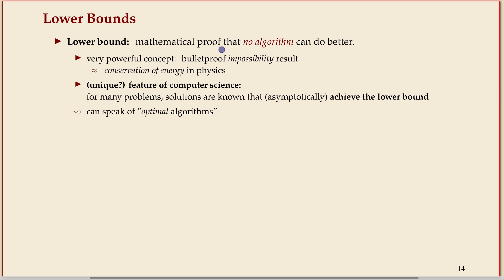In that sense it's a super powerful concept, because it means if you have an algorithm that's close to that bound you can stop searching. I can compare it to the conservation of energy principle in physics. That's the kind of generality that we're hoping for. It seems to be somewhat unique for computer science to get so close to these lower bounds.